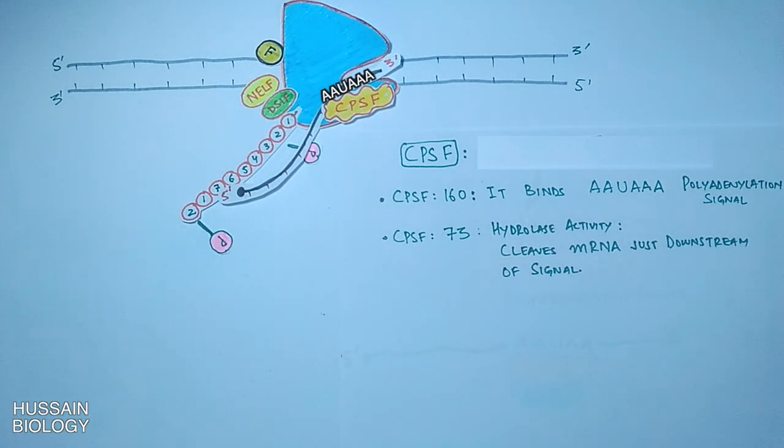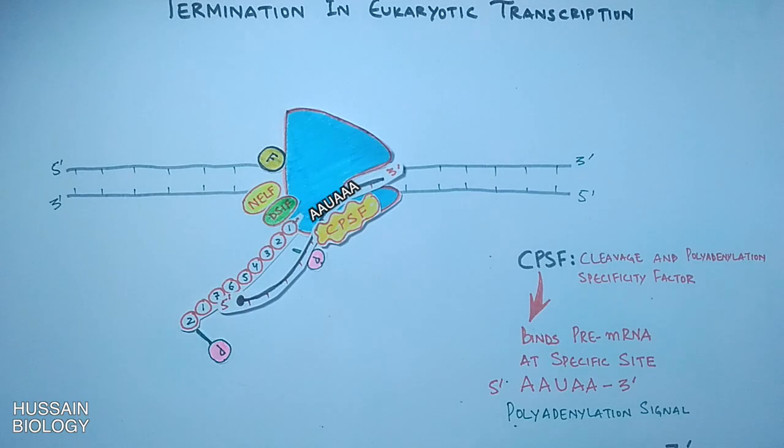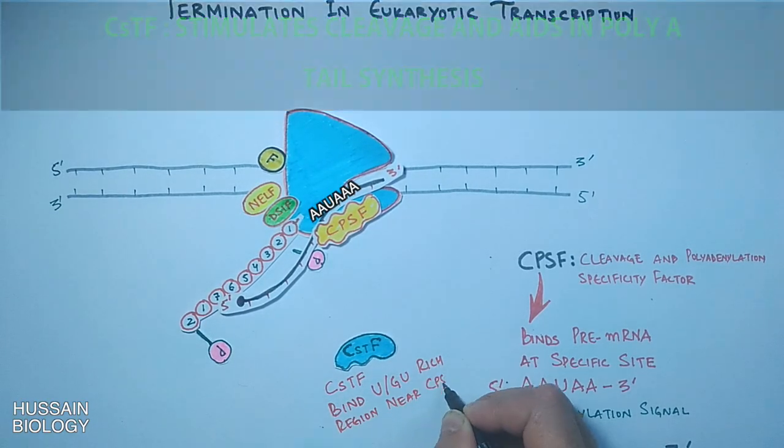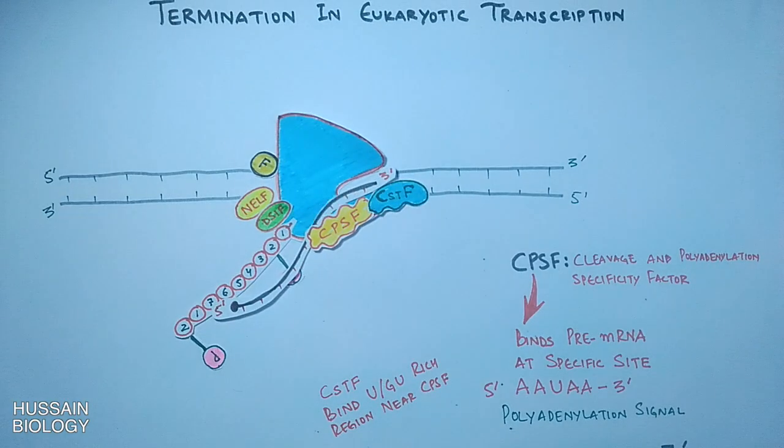Now in the next step, this CPSF molecule recruits another factor to the mRNA molecule, which is the CstF. This CstF binds U or GU rich region downstream of poly-A signal. Now let's see the binding of these cleavage factors separately on mRNA molecule.